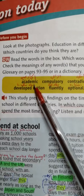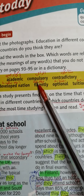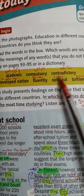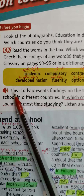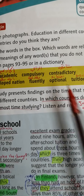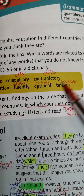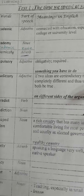Let's look at 'academic' — connected with education, of course. 'Compulsory' means إلزامي (obligatory). 'Contradictory' means متناقض. Pay attention to the spelling of the words. I'm giving you the words and their Arabic meanings. 'Developed nation' means أمة متطورة. 'Fluently' means بطلاقة. 'Optional' means اختياري. 'Tuition' means تعليم أو دروس (teaching or lessons). Now let's look at these words — they are available for you in the notes.